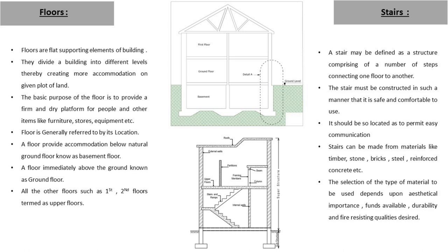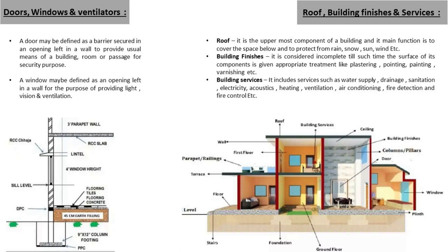Coming to doors, windows, and ventilators: a door may be defined as a barrier secured in an opening left in the wall to provide the usual means of entry to a building, room, or passage for security purposes. A window may be defined as an opening left in the wall for the purpose of providing light, vision, and ventilation. The topmost part is the roof — it is the uppermost component of a building and its main function is to cover the space below and to protect from rain, snow, sun, wind, etc.